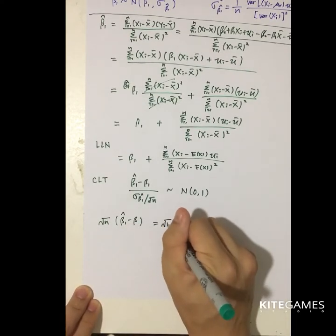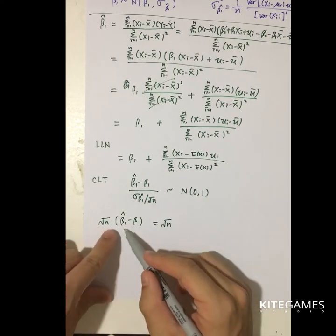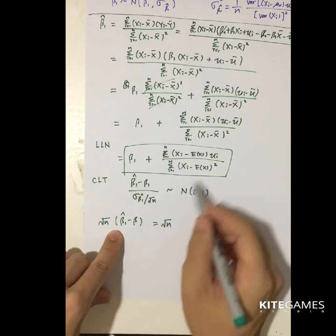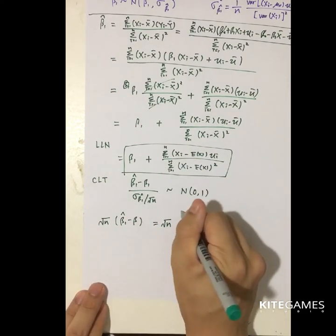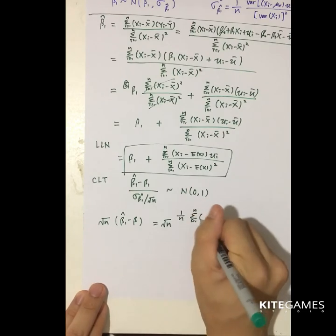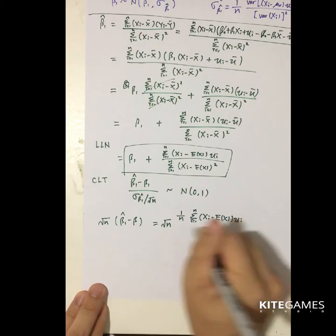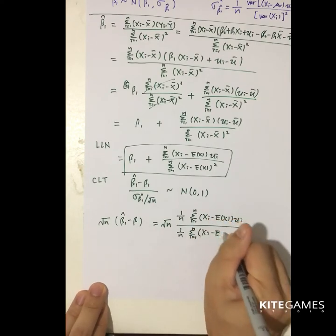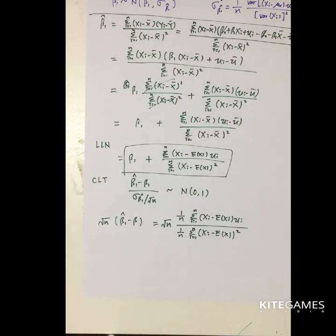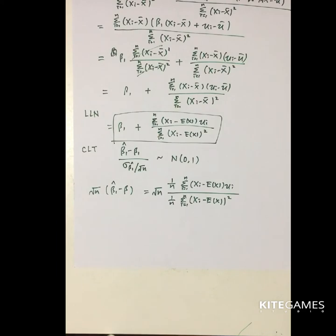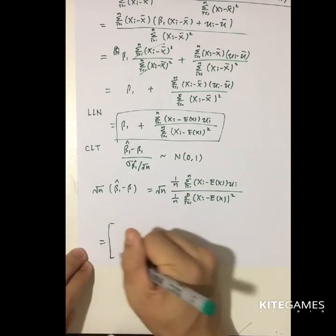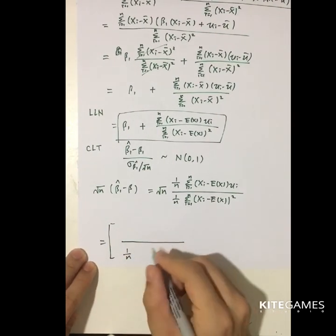So what is this equal to? This equals square root of n times (beta 1 hat minus beta 1). Since beta 1 hat minus beta 1 gives us just the second part, I put 1/n in both numerator and denominator and keep it the same. The next step requires some manipulation: I need to separate the fraction into two.